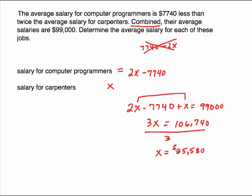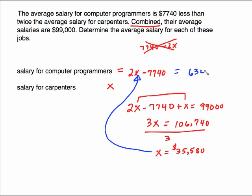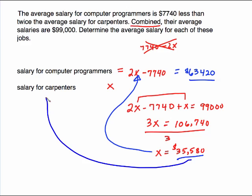That is the salary for carpenters, because that's who x was. Plug $35,580 in for x to find the computer programmer salary: 2 times $35,580 minus $7,740 equals $63,420. So $63,420 is the computer programmer answer, and $35,580 is the carpenter answer.